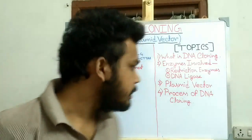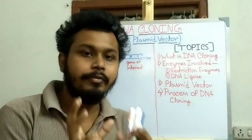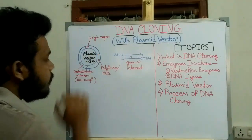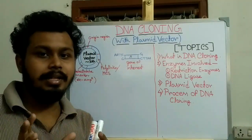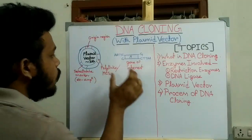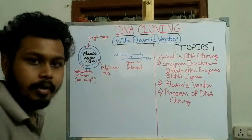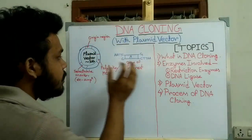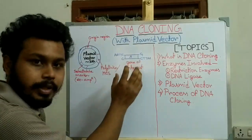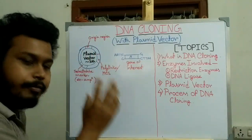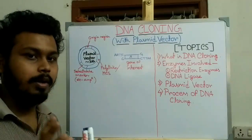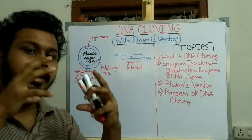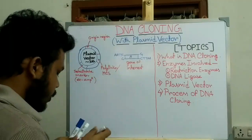To start the DNA cloning process, we first have to cut the plasmid vector in the polylinker region using the same restriction enzyme used to cut the gene of interest — gene A. Since we use ECO-R1 as the restriction enzyme to cut the gene of interest, we also cut the plasmid vector with ECO-R1 so that they produce the same sticky ends and can integrate with each other.